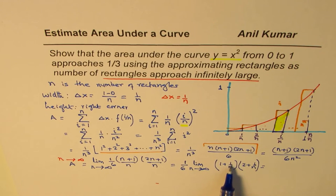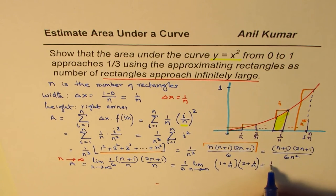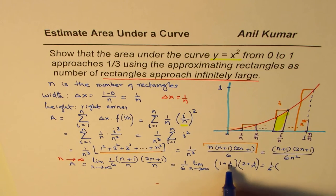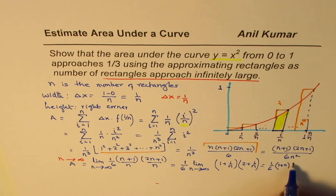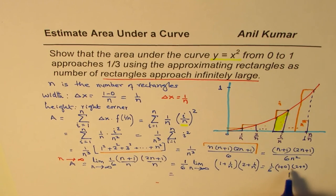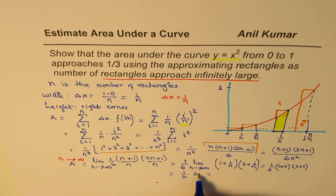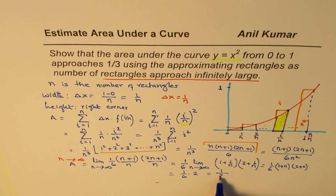Perfectly fine. If n is very large, what will happen to 1 over n? 1 divided by a large number approaches 0, so this will be 0. So basically we'll get 1 over 6 times 1 plus 0 times 2 plus 0. And that gives you, when you open this up, 1 times 2, so it is 1 over 6 times 2, and that is equal to, when you simplify, 1 over 3. Perfect. So this is what you get.